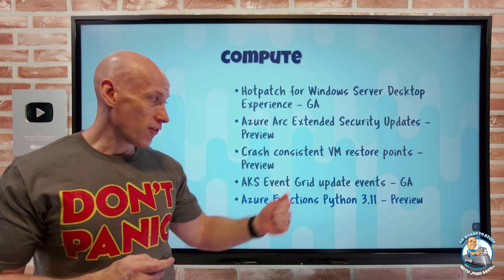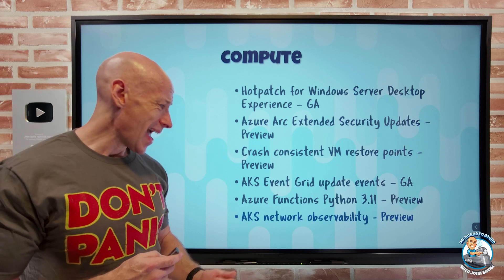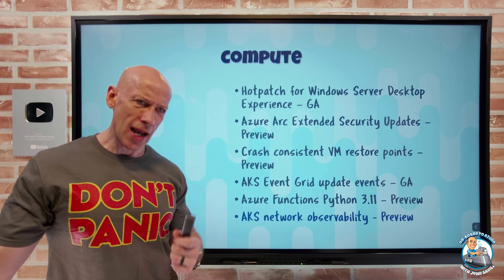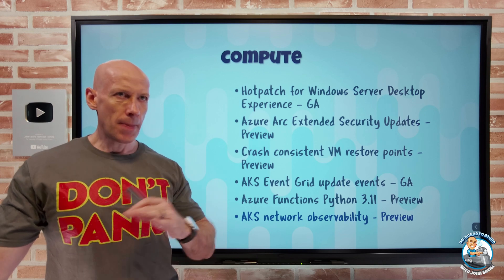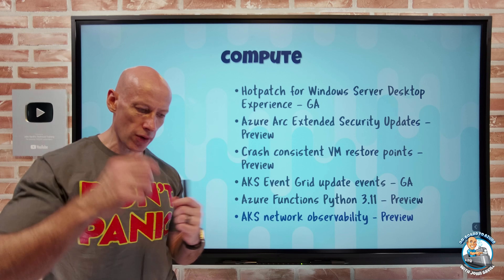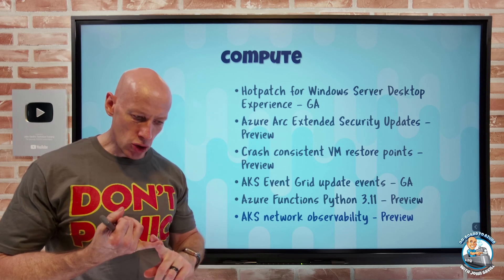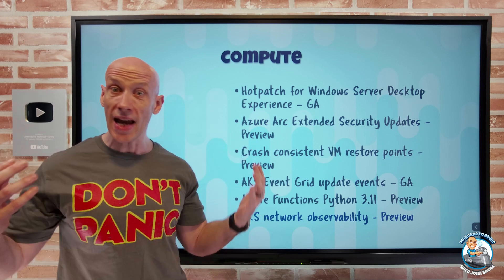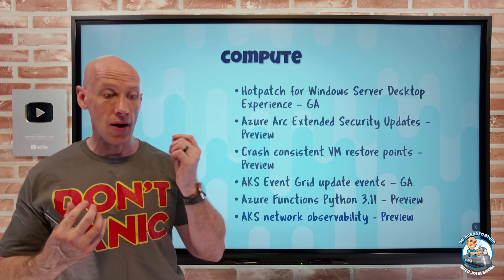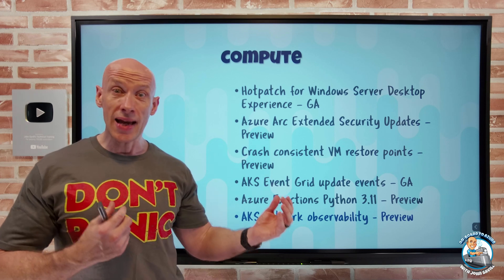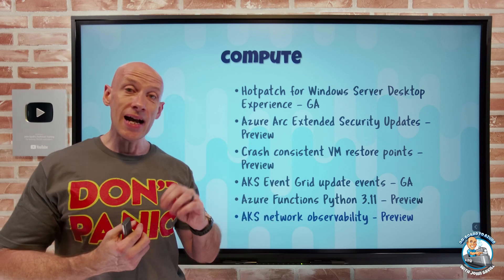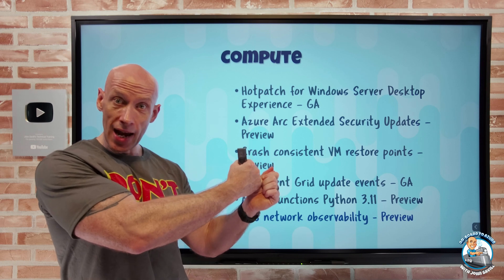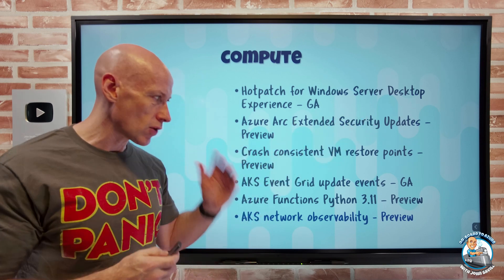Azure Functions now has Python 3.11 support in preview. AKS network observability is also in preview — it's a new add-on for AKS that provides complete observability into network health and connectivity. You get cluster-level metrics like packet drops and connection stats, plus pod-level metrics and network debugging features. It works with all Azure CNIs, including Azure CNI powered by Cilium, supports Linux and Windows node pools, and integrates with both managed and self-hosted Prometheus and Grafana.